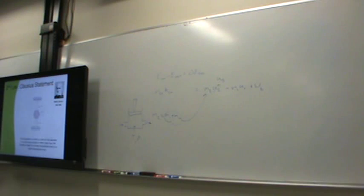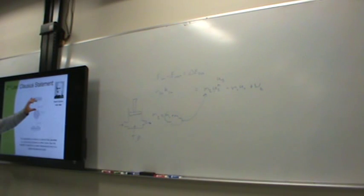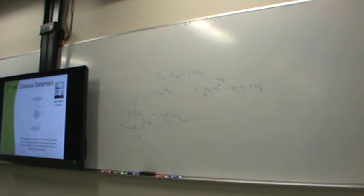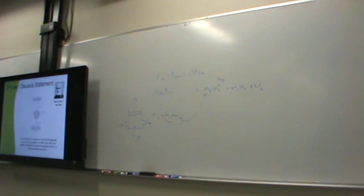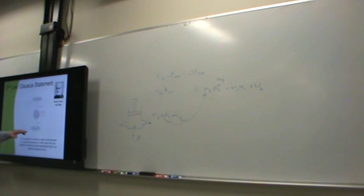Let's consider a heat engine that breaks the Kelvin-Planck statement along with a refrigeration unit. We pretend that Kelvin-Planck is wrong and we can take in heat producing work at 100% efficiency with no rejected waste heat. We size this refrigerator so that all the network pumps Q_L up. By the energy balance, Q_H cancels out and you have Q_L flowing from cold to hot without any work input — which breaks the Clausius statement. So if you believe that thermal energy does not flow from cold to hot all by itself, you also believe you cannot take in a net amount of heat and produce a net amount of work without rejecting any waste.